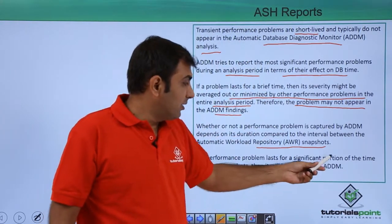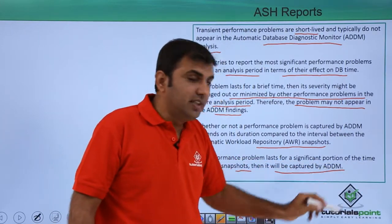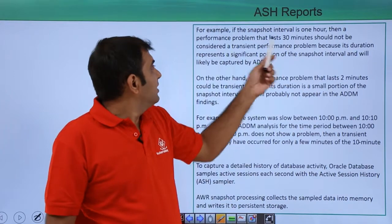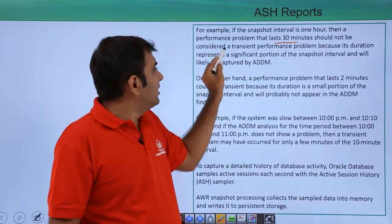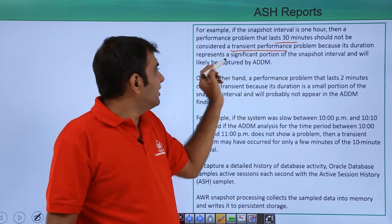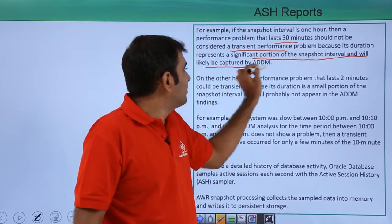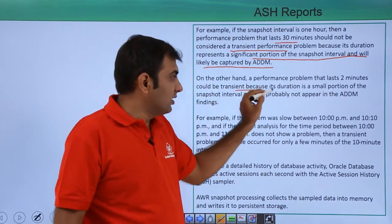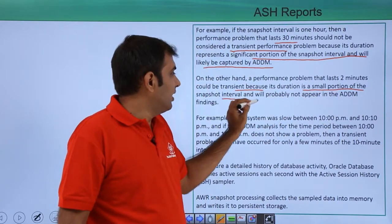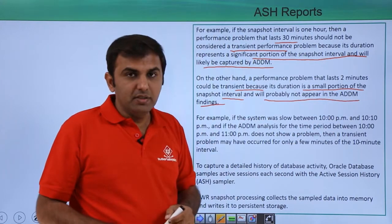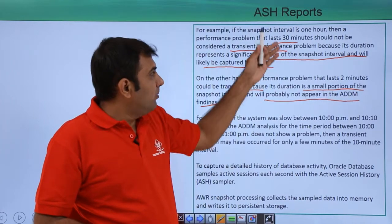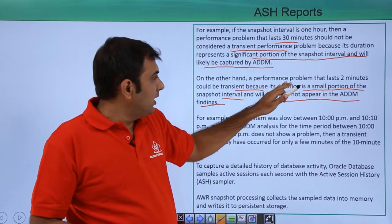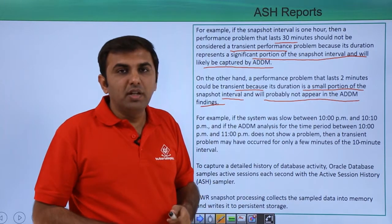Whether or not a performance problem is captured by ADDM depends on its duration compared to the interval between AWR snapshots. If your issue occurs for only one or two minutes, it will not be covered under ADDM reports. If the performance problem lasts for a significant portion of the snapshot interval, it will be captured by ADDM. For example, if the snapshot interval is 1 hour and the performance problem lasts 30 minutes, that should not be considered a transient problem. But a problem lasting only 2 minutes is transient and will probably not appear in the ADDM findings.